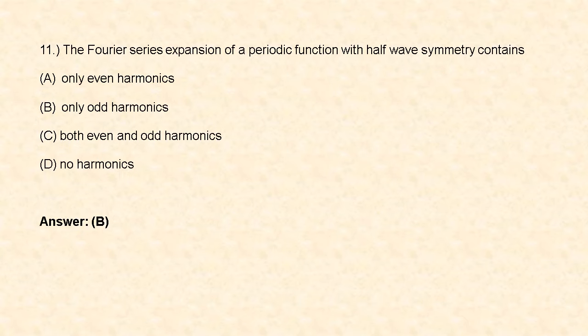Next question: the Fourier series expansion of a periodic function with half-wave symmetry contains: option A: only even harmonics, option B: only odd harmonics, option C: both even and odd harmonics, option D: no harmonics. If a signal possesses half-wave symmetry, then the Fourier series coefficients a_n and b_n are equal to 0 for n even, so only odd harmonics exist. Hence option B is correct.